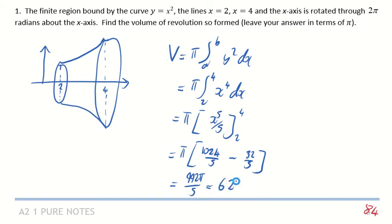you're going to get 992 pi all over 5, which is equal to, that's the exact value, which is equal to 623.29, and it's a volume, so just say units cubed, and that's it.